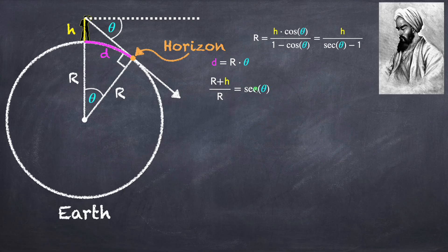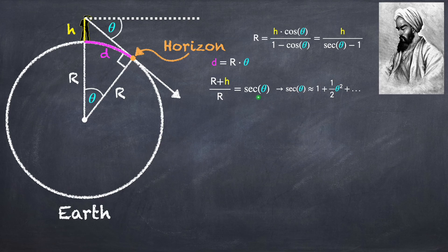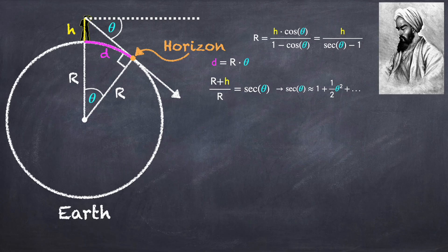Because theta is small, it turns out that secant theta can be very well approximated as being 1 plus theta squared divided by 2. You may recognize this as a Taylor expansion of secant theta. If you don't know what a Taylor expansion is, you can just take this approximation to be a given.